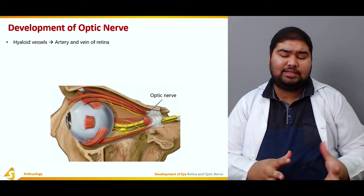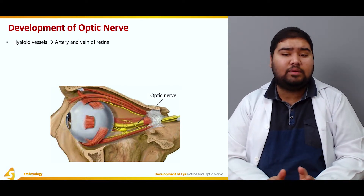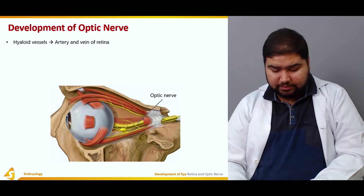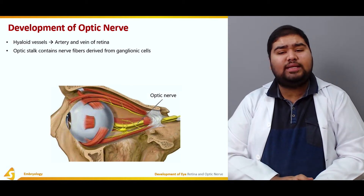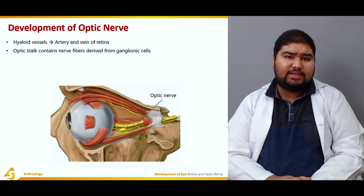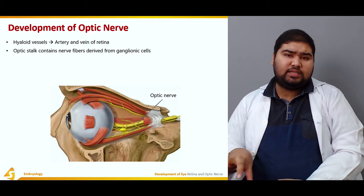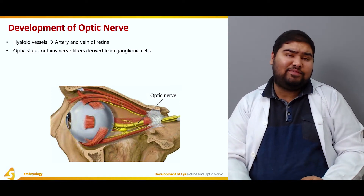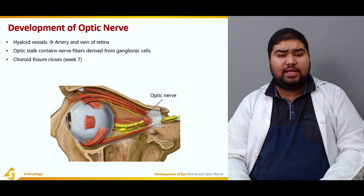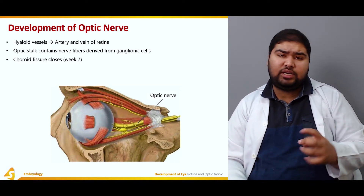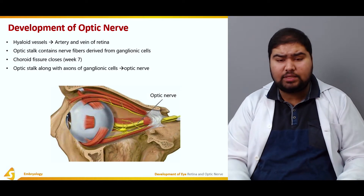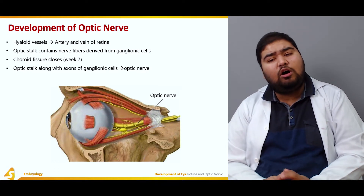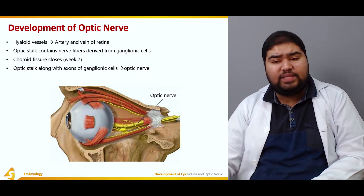Moving on to the development of the optic nerve: the hyaloid vessels, consisting of the hyaloid artery, give rise to the central artery and vein of the retina. The optic stalk contains nerve fibers derived from the ganglionic cells. The choroid fissure closes at about 7 weeks of development, and with this closure the optic stalk along with the axons of the ganglionic cells becomes the optic nerve.